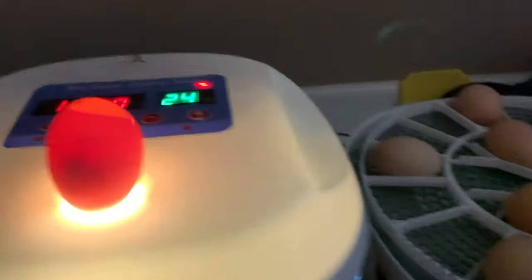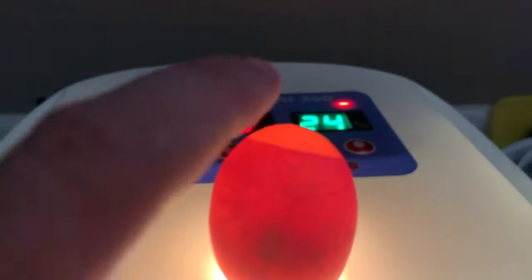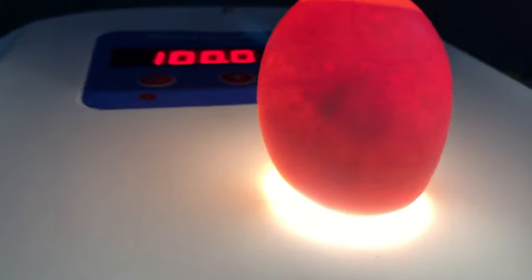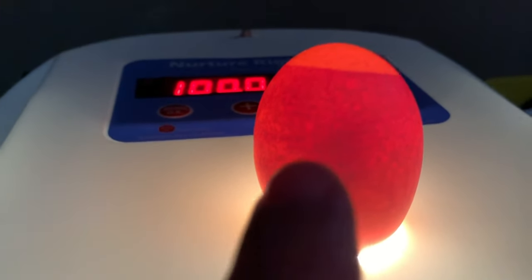I just candled all the eggs. And this one is a really good one. You can see here the black dot, the air sack up at the top. And I believe when you candle them, you're supposed to candle the pointy end. You could kind of see some veins, but not really. But black dot, air sack.